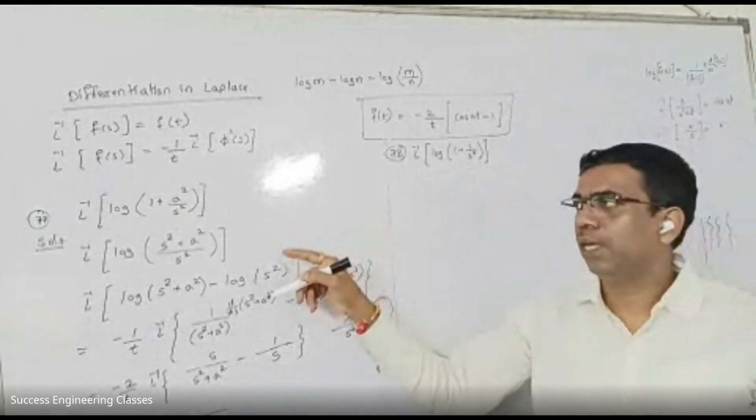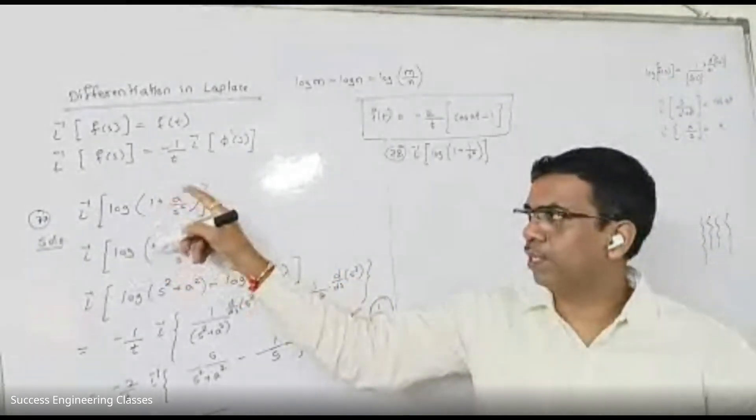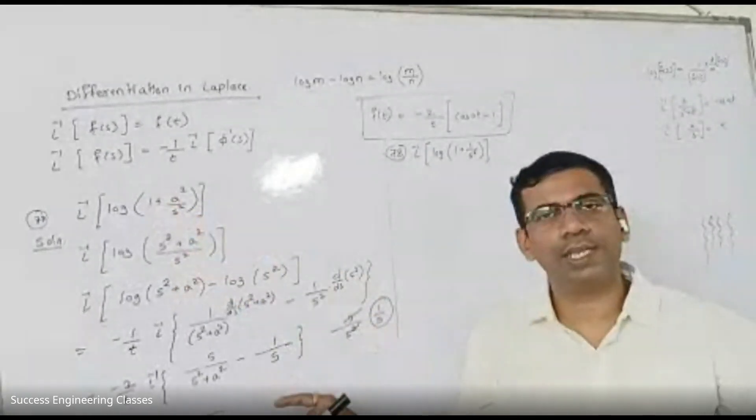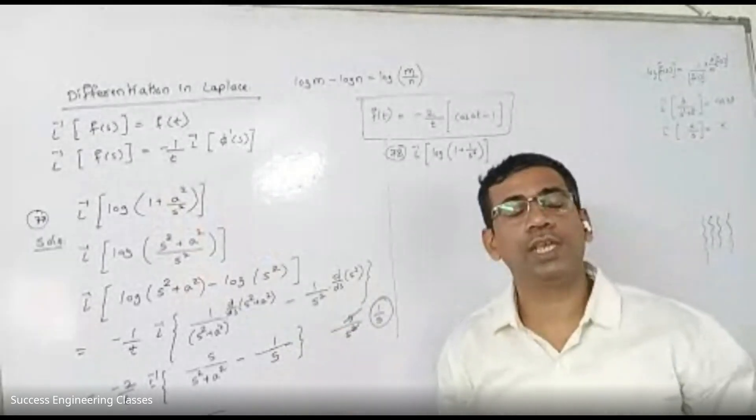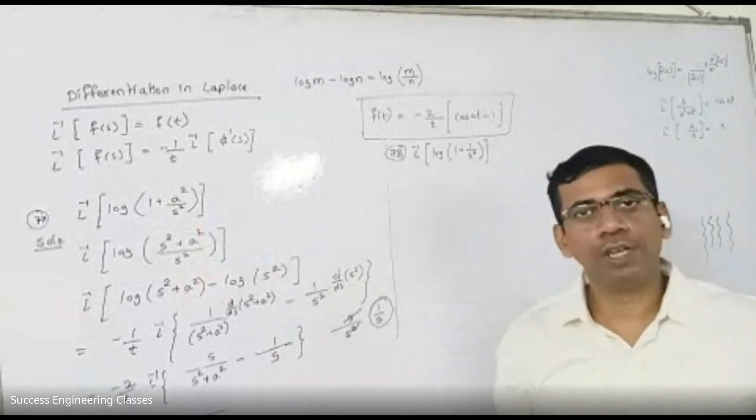In the previous session, we had log of 1 plus A square by A square. These are the very special or mysterious numericals for Universal Appliance.